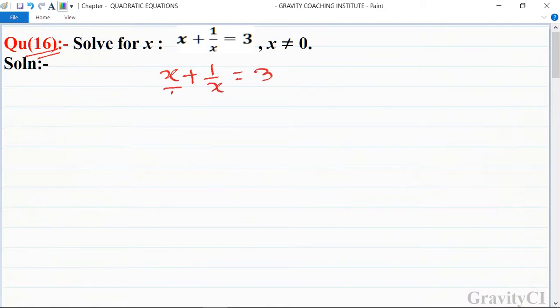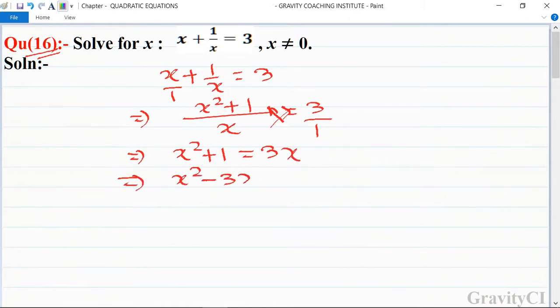And now we take LCM of 1 and x, so x squared plus 1 is equal to, cross multiplication, we get x squared plus 1 is equal to 3x. So this implies that x squared minus 3x plus 1 is equal to 0.